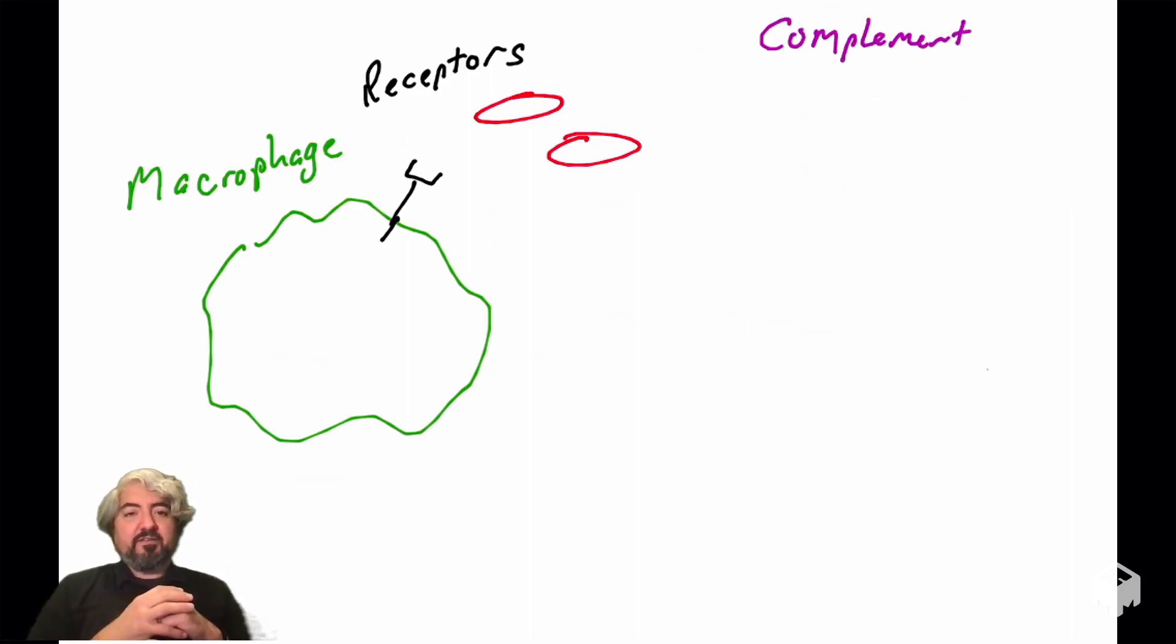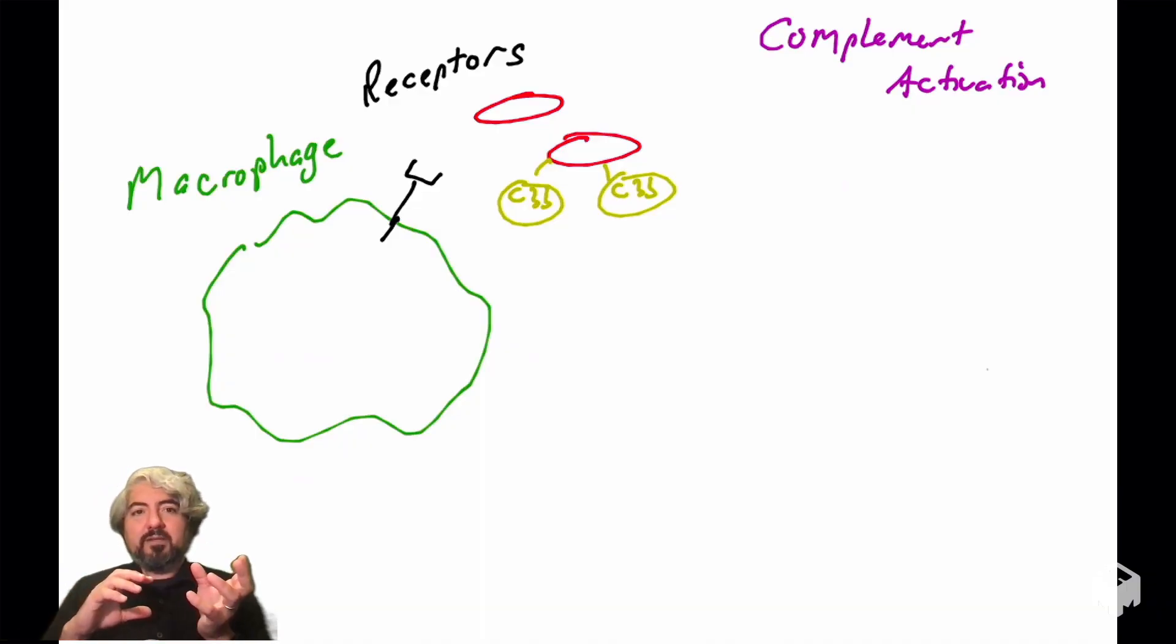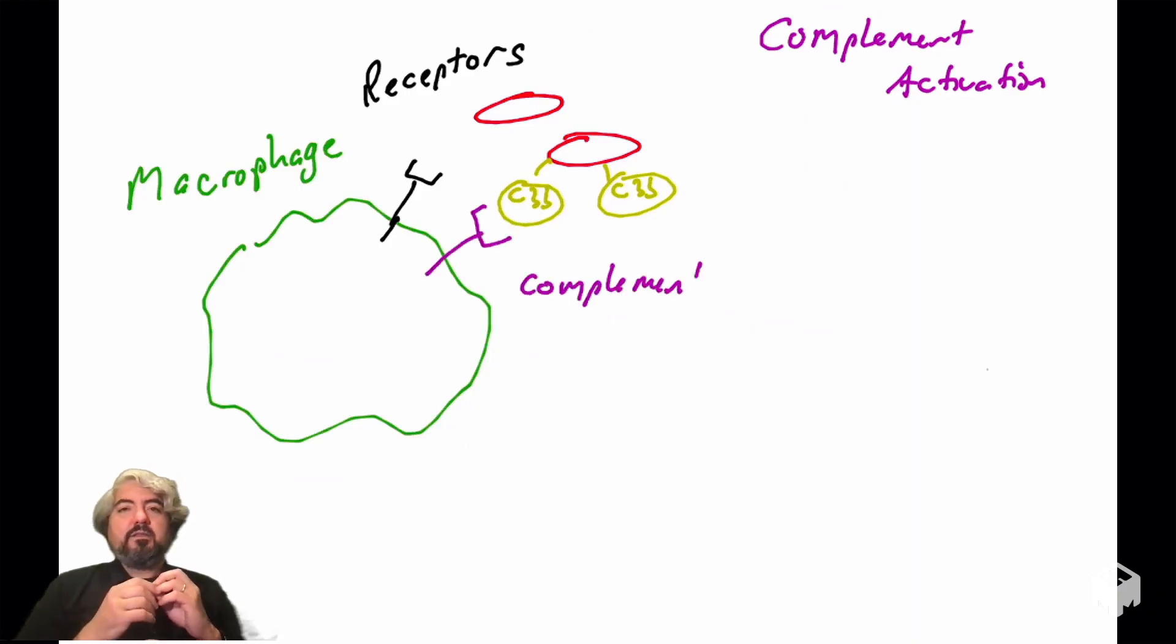What I want to introduce in this video, because it follows our video on complement activation, is that when complement is fixed to the surface of a pathogen, or anything really, C3B is attached to something, there is a receptor on the surface of a macrophage. We're going to introduce this right now with phagocytes, with macrophages specifically. We're going to introduce a complement receptor, drawn here in purple, found on the surface of a macrophage. What I'm showing here is how a complement receptor will bind to complement that is fixed on the surface of a pathogen.